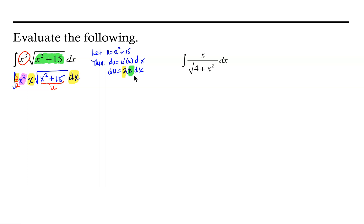We're still left to consider what to do with this x squared. Well, if we come back up to where we declared that u is equal to x squared plus 15, and we want to replace this x squared — if u is equal to x squared plus 15, then x squared would be equal to u minus 15. So we could replace this x squared with u minus 15.